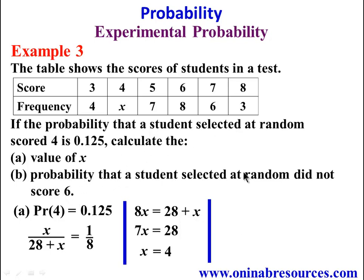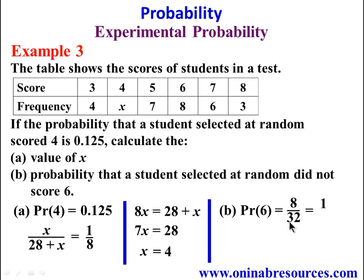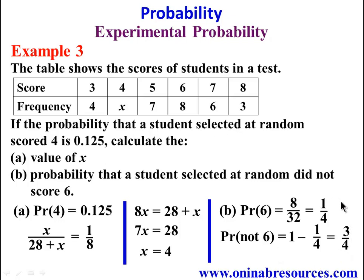Calculate the probability that a student selected at random did not score 6. First, we calculate the probability that a student scored 6. The probability that a student scored 6 will be the frequency of 6, that's 8, over the sum of the frequencies, that's 28 plus 4, which is 32. So the probability is 8 over 32, which simplifies to 1 over 4. To get the probability that the student did not score 6, it will be 1 minus 1 over 4, giving 3 over 4. And that's all for the solution of example 3.